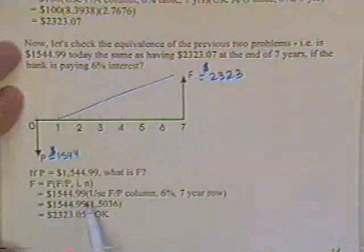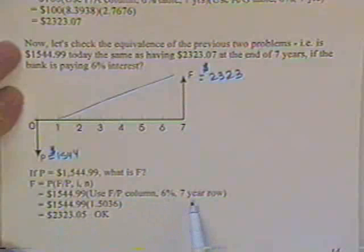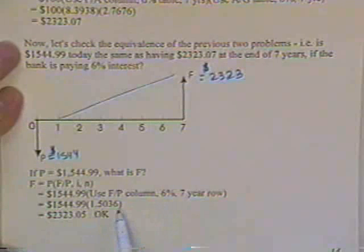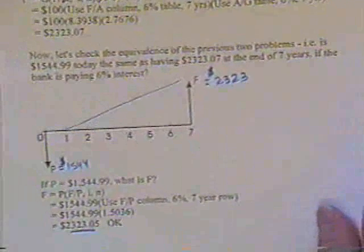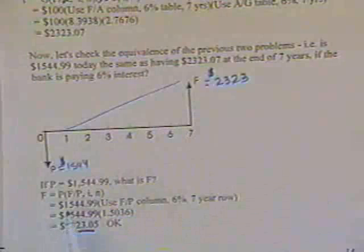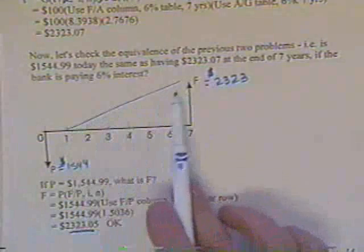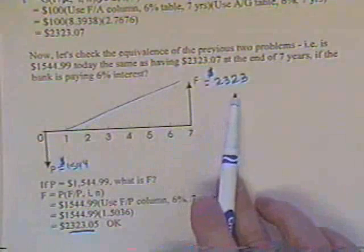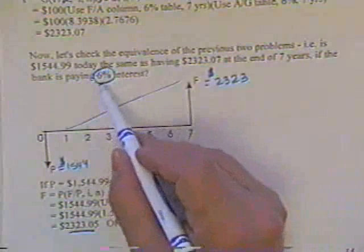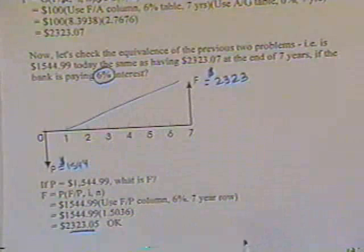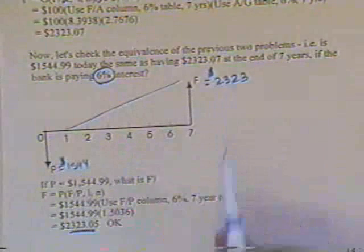If P is $1,544, you'd use the F over P column, 6% interest, 7 year row. So you find the factor is 1.5036, and it does indeed give the same amount within reasonable accuracy. So all three of these cash flows are identical. Which would you like? I don't care. Give me $1,500 now, give me $100 gradient in the agreed-upon fashion, or give me $2,323 at the end of seven years, and I don't care which one you give me. They're all the same, assuming that I'm willing to loan money at 6%. Obviously if I'm desperate to buy a $1,500 computer today, then I'd less rather have the $1,500 today than the $2,323 later.